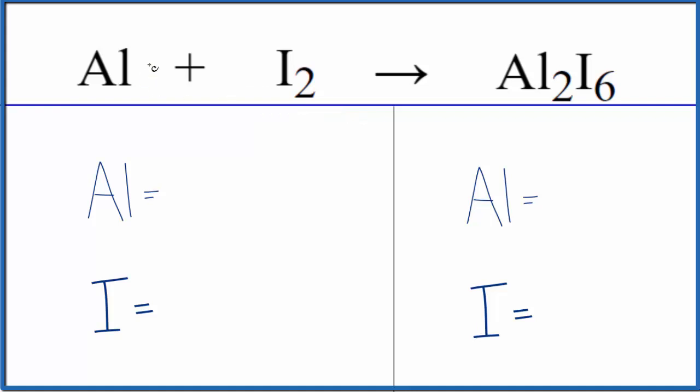So the type of reaction, we have these two different substances coming together to form one new substance. So two things are combining to form one substance. It's a combination reaction. That's also called a synthesis reaction.